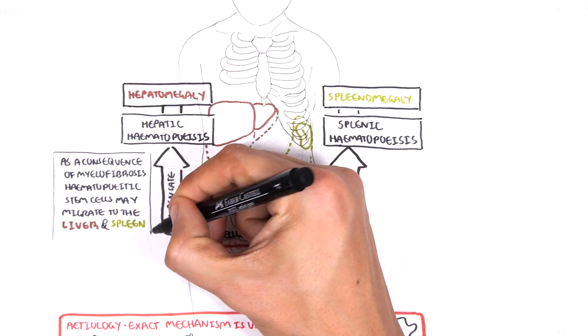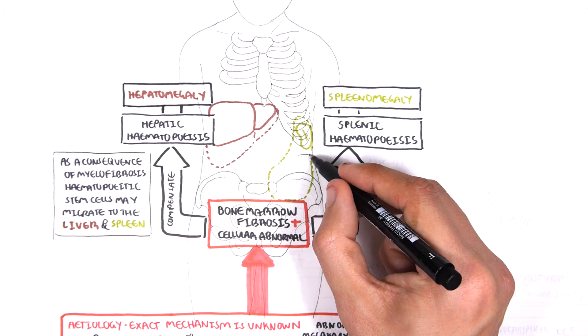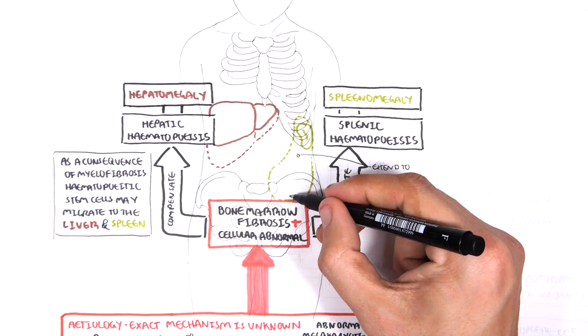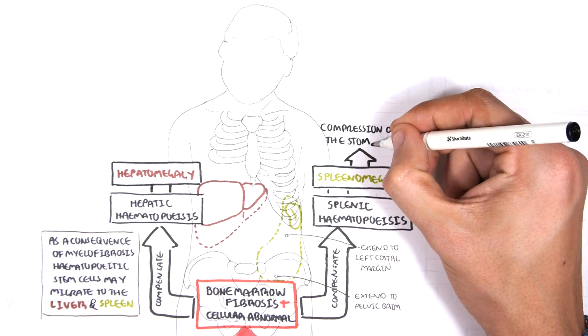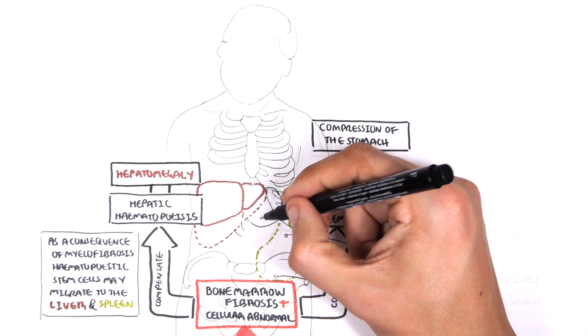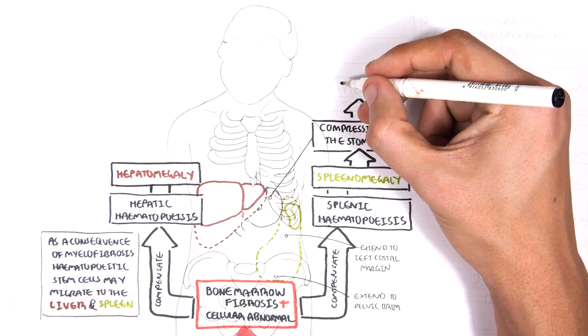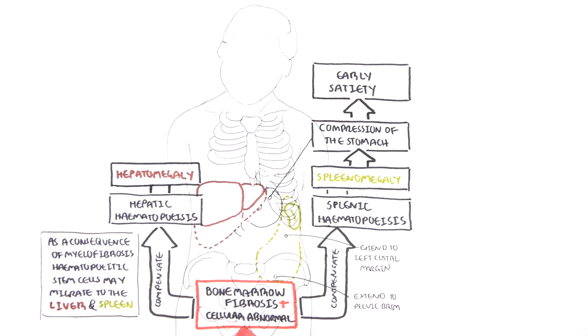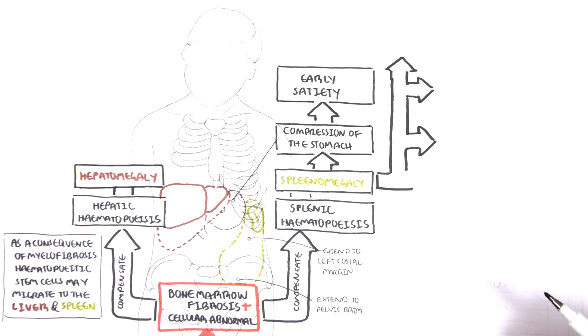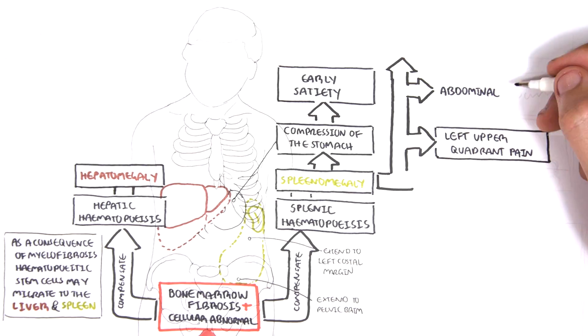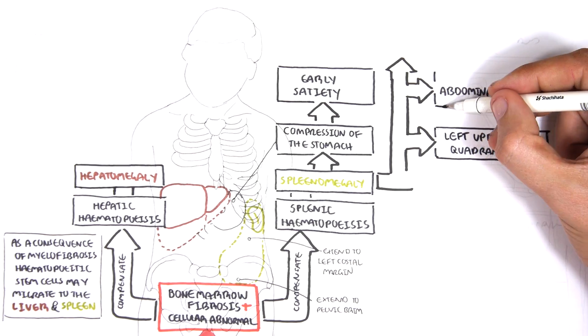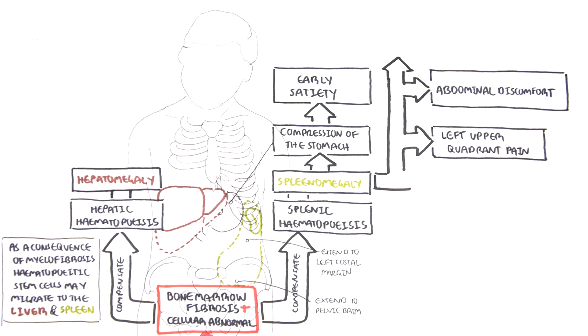A note about the spleen. The spleen can grow so big it extends to the left costal margin of the ribs, and even further and extend towards the pelvic brim. The spleen enlarges and it can actually compress the structures nearby, such as the stomach, which is right next to it. Because the spleen compresses the stomach, it can cause early satiety. Splenomegaly can undergo small infarctions and irritate the surrounding tissue, causing left upper quadrant pain. Splenomegaly may also cause abdominal discomfort and a dragging sensation.